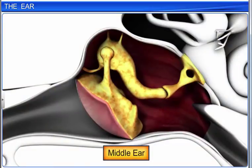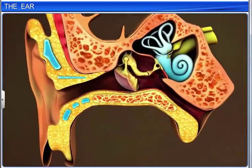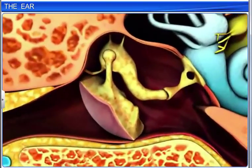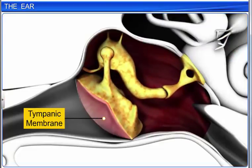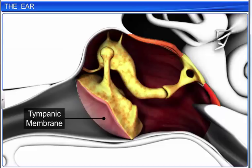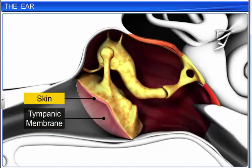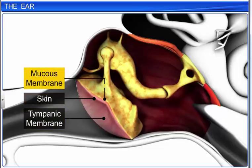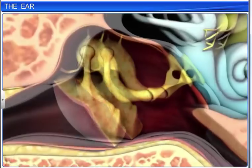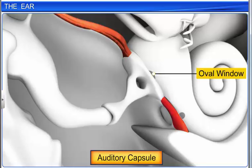The middle ear consists of an air-filled space called the tympanic cavity, that separates the outer and inner ears. The tympanic cavity is bound externally by the tympanic membrane, also known as the eardrum, and internally by an auditory capsule. The tympanic membrane is composed of connective tissue that is covered with skin on the outside and a mucous membrane on the inside. The auditory capsule has two membrane-bound apertures called the oval window and the round window.